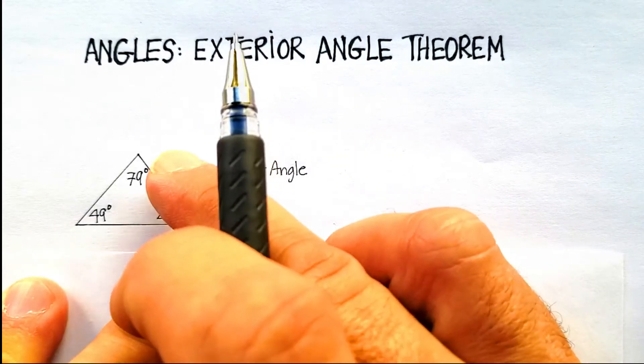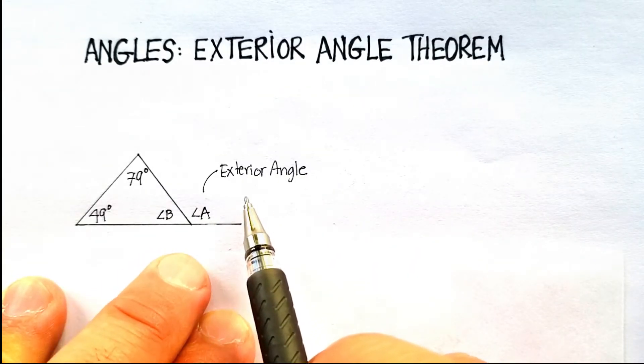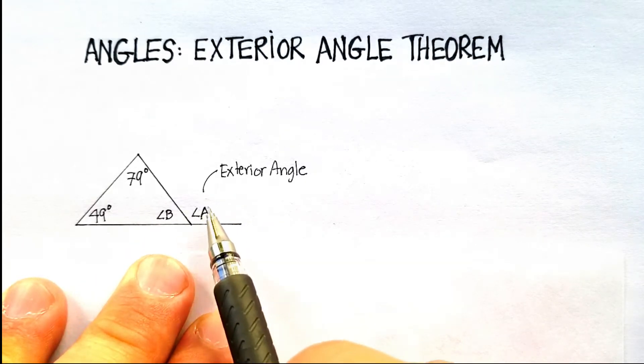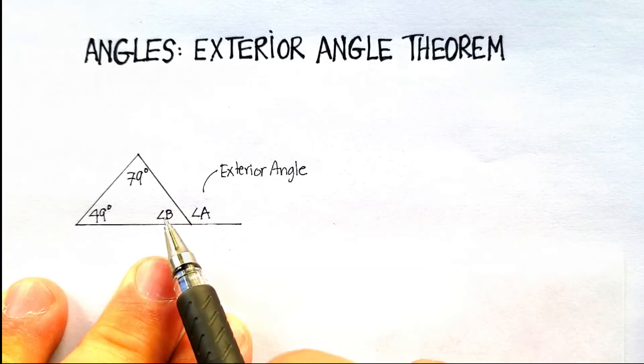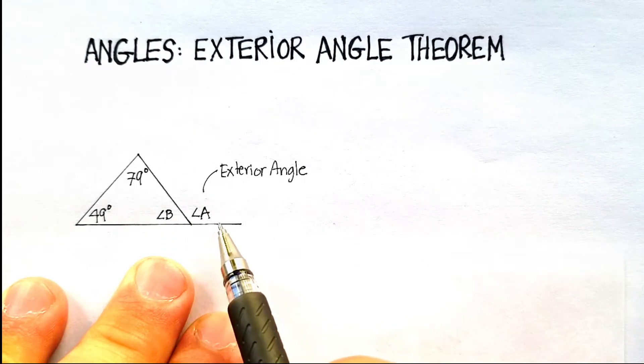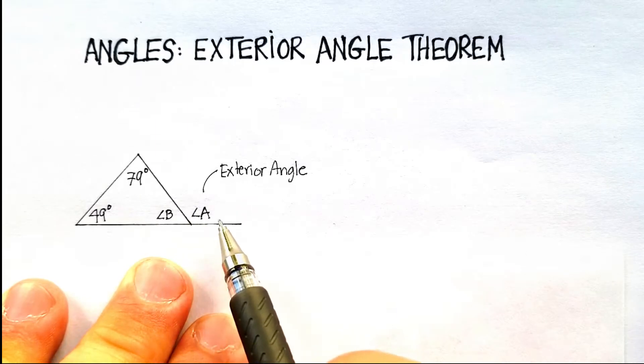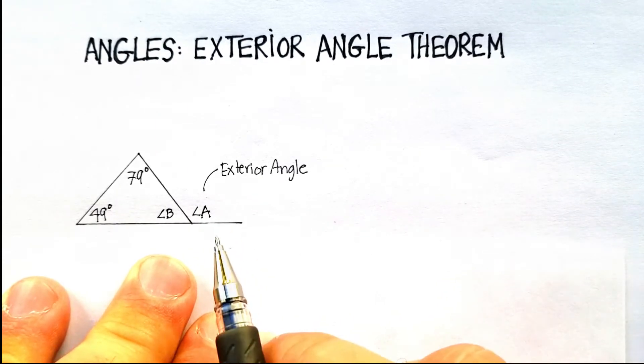Now, here's a cool thing about exterior angles. There's two things that you always will be able to know from an exterior angle. In this case, angle A, and then the angle that's immediately next to it, angle B, will always equal 180 degrees. Now, why is that? Because basically this is a straight line, and we know that straight lines equal 180 degrees.